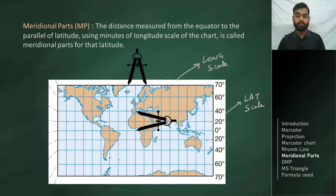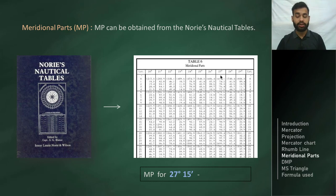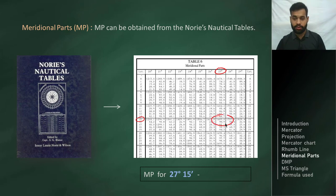We can obtain meridional parts from Norie's Nautical Tables. Let's take out the meridional parts for 27 degrees 15 minutes. We look in the 27-degree column — the latitudes are shown at the top and the minutes are on the left side. For 15 minutes, the meridional parts for 27 degrees 15 minutes is 1689.8.